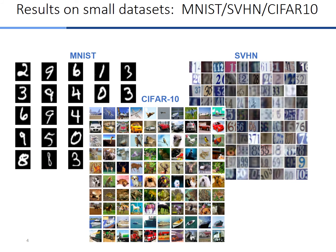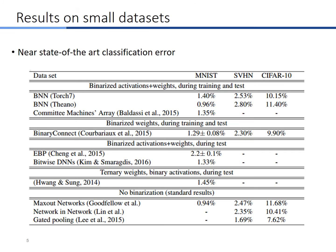Our results were tested on small classification datasets: MNIST, SVHN, and CIFAR-10. In all experiments, binarized neural networks achieved comparable results to their 32-bit counterparts.